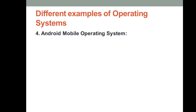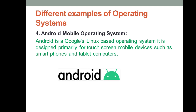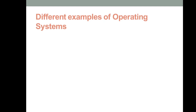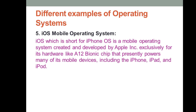This is the logo of the Linux operating system. The next type is the Android mobile operating system. As you may know, Android is found in many mobile phones such as Samsung and Nokia devices. Android is a Google Linux-based operating system designed primarily for touchscreen mobile devices such as smartphones and tablet computers.